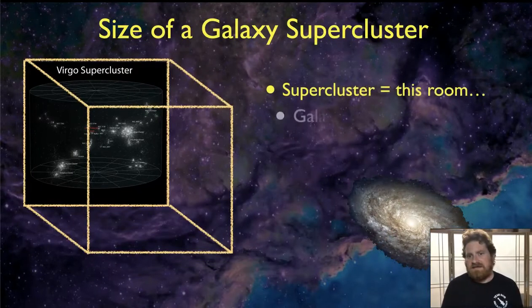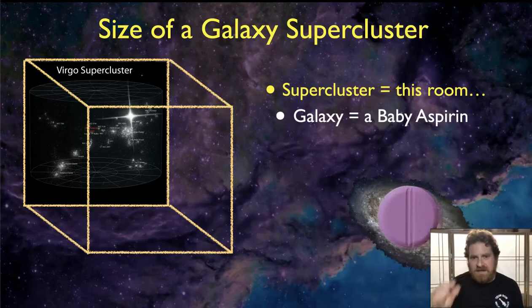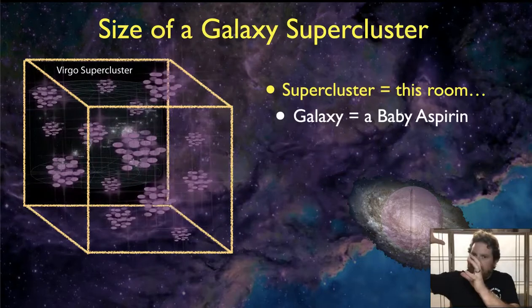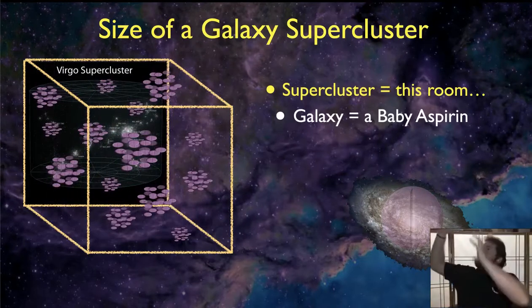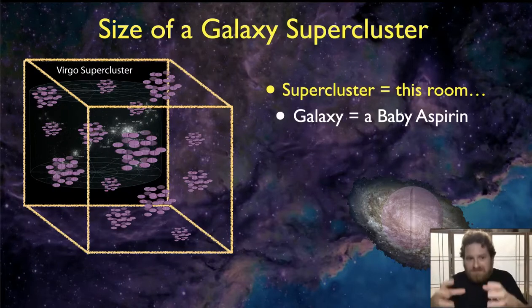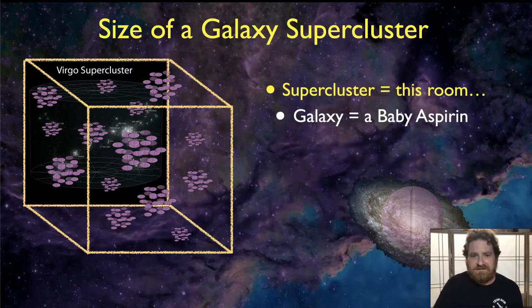And you'd have little one-meter-wide clusters or so of baby aspirin, and they would be sort of clustered throughout the room. And that entire grouping of clusters of these little baby aspirin-sized galaxies, that would be equivalent to a supercluster. Now, our observable universe is made of a vast network of superclusters of galaxies.